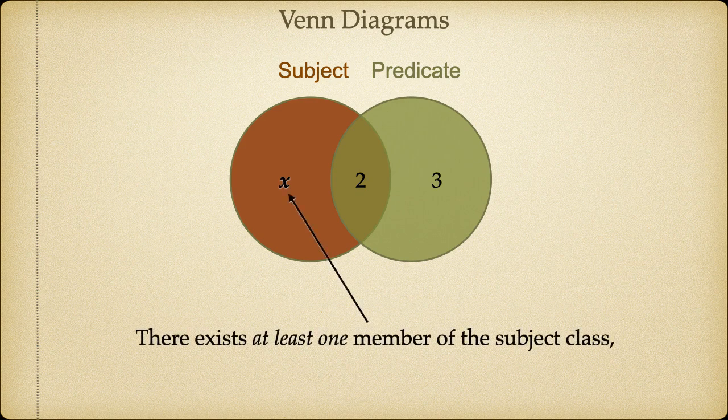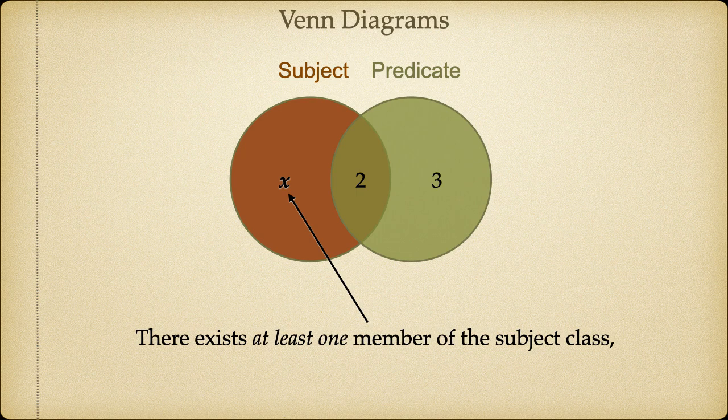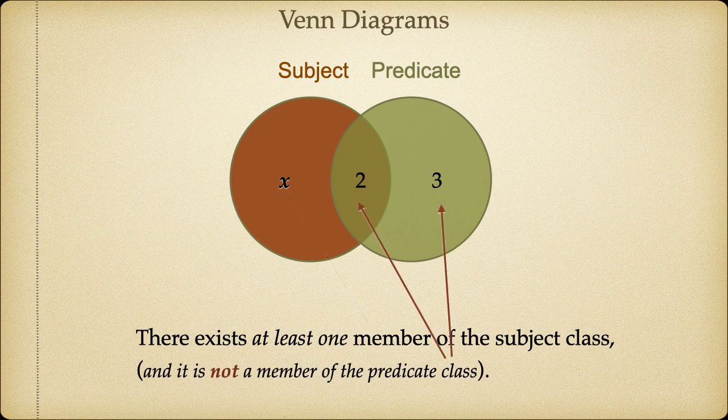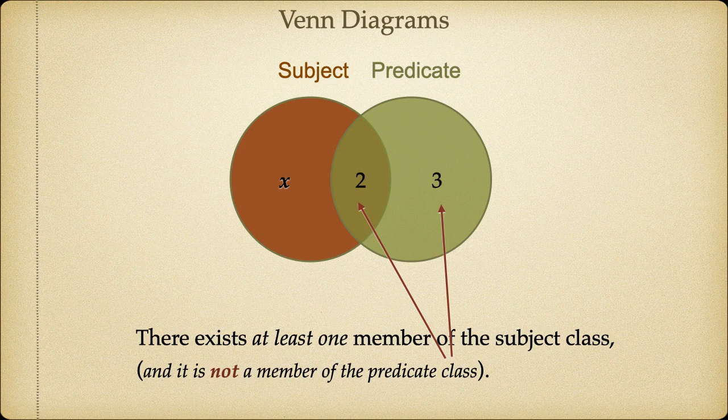For example, if we wanted to show that there was one member of the subject class that was excluded from the predicate class, we'd put an X in Region 1. Note that Regions 2 and 3, since they don't have an X in them, remain ambiguous as to membership. Maybe there are things in Region 2 and 3. Then again, maybe not. What we do know is that there's at least one thing in Region 1.